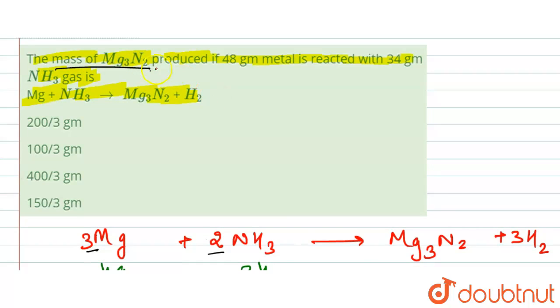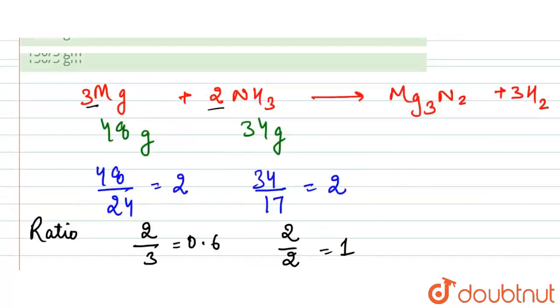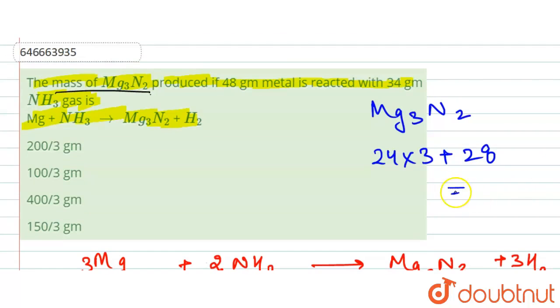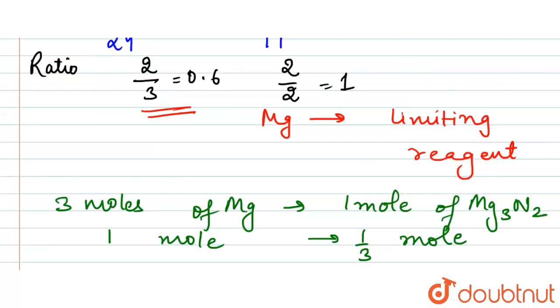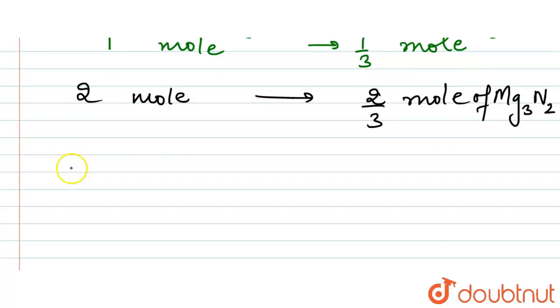We need to calculate the mass of Mg3N2. For that, we first should know what is the molecular weight of Mg3N2. So that is 24 into 3 plus 28, that is 14 into 2, and here it is 100.